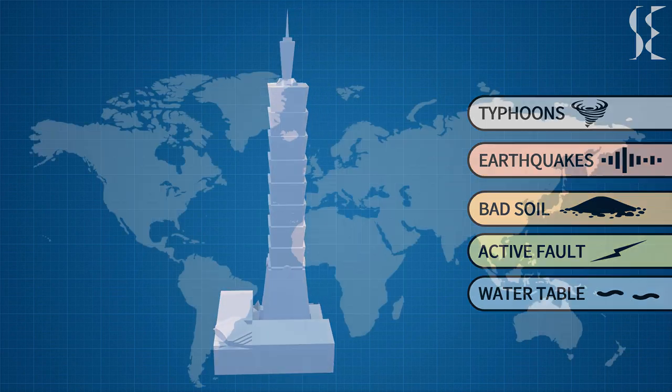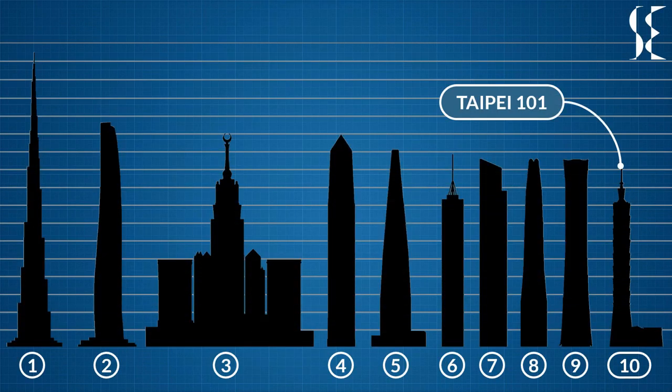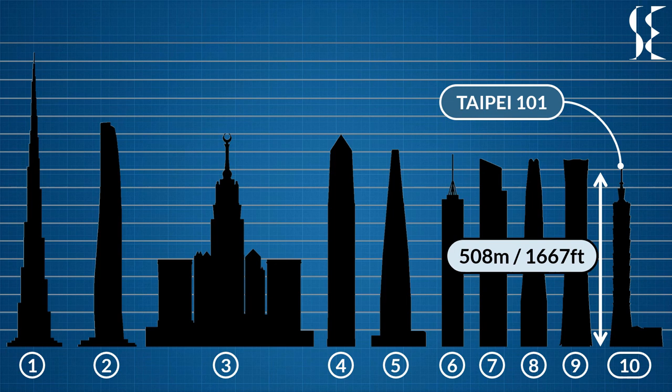Taipei 101 is located in Taipei, which is the capital of Taiwan, located in East Asia. It is currently the 10th tallest building in the world at 508 meters and was the tallest building in the world from 2004 to 2010.